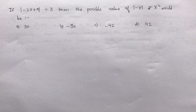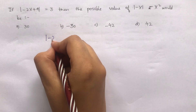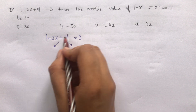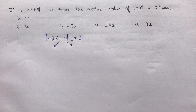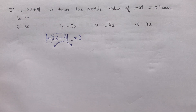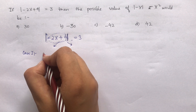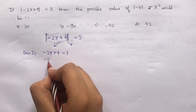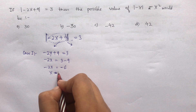Next question is on modulus. The equation is |−2x + 9| = 3. When we take the modulus of a value, if it's negative it becomes positive, and if it's already positive it stays positive. So we have two cases. Case 1: the value inside is positive, so −2x + 9 = 3, which gives −2x = 3 − 9 = −6, so x = 3.